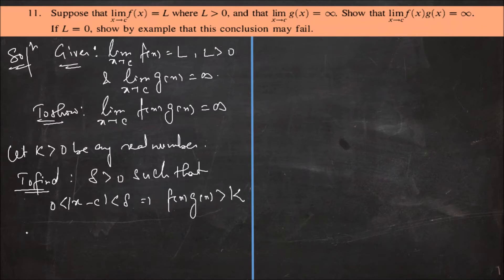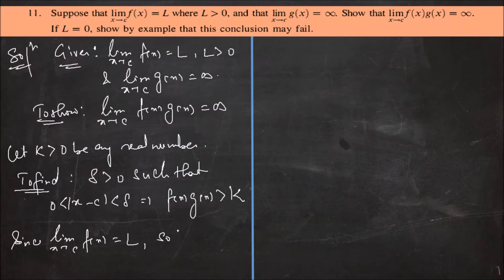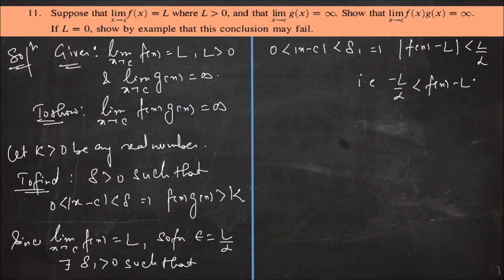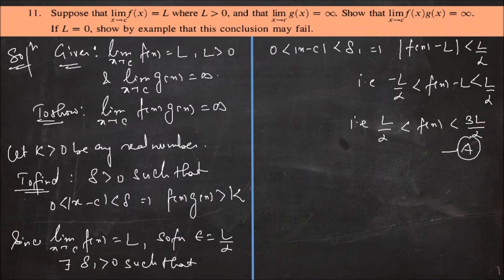We will use the fact that limit x tends to c of f(x) is equal to L. Since limit x tends to c of f(x) equals L, for epsilon equal to L by 2, there exists delta 1 greater than 0 such that 0 less than |x minus c| less than delta 1 implies |f(x) minus L| is less than L by 2. That is, minus L by 2 is less than f(x) minus L is less than L by 2, which implies L by 2 is less than f(x) is less than 3L by 2. Mark this as A. So f(x) is greater than L by 2 — this inequality we are going to use further.